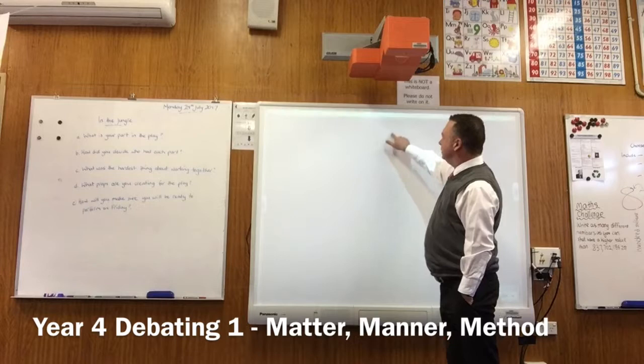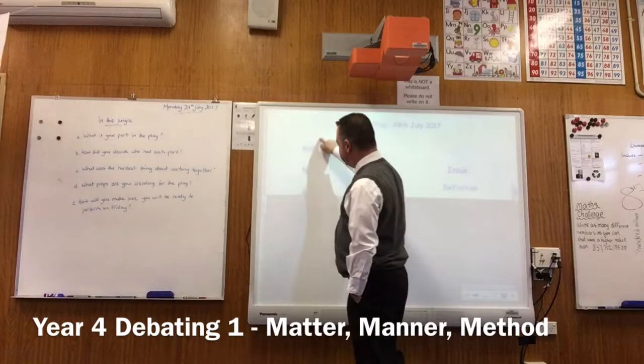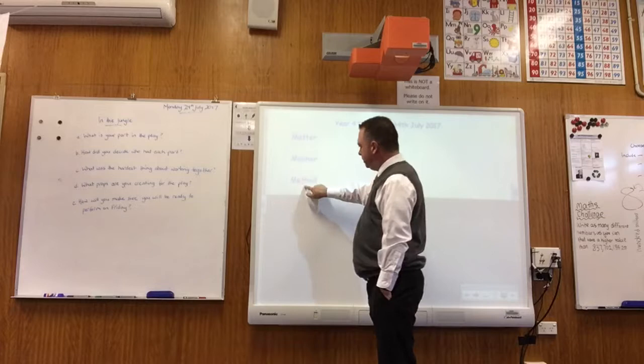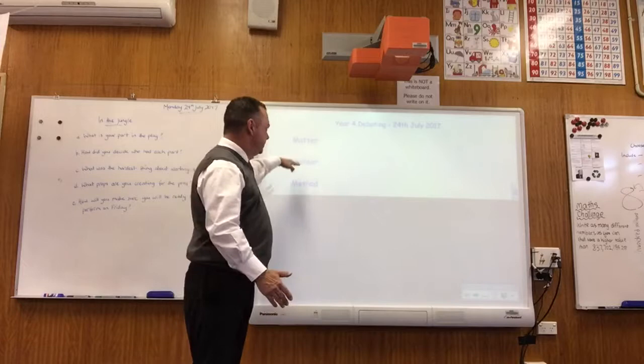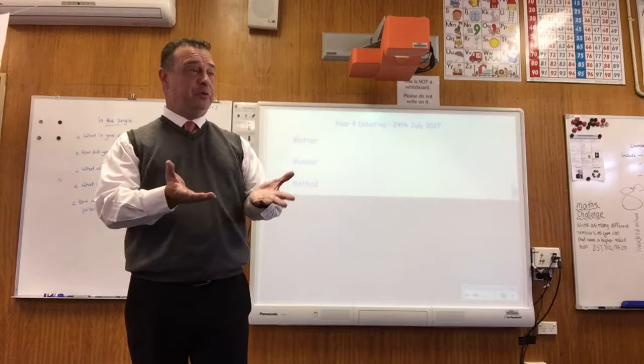All right, so let's start. The first thing I want to talk about is this stuff you've already covered in public speaking. Remember in public speaking we talked about those three things: matter, manner, and method. It's related to debating. So let's just quickly review - I'm not going to spend a lot of time on it now since we spent a lot of time talking about this in public speaking, but I briefly want to go over it again because it's important.